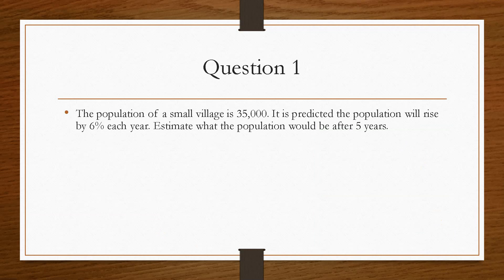So if we take a look at question 1, it gives us a population of a small village which is 35,000 and it's predicted that the population will rise by 6% each year. We need to estimate the population after 5 years. We'll use the appreciation equation because we are rising by 6%, so we are increasing.